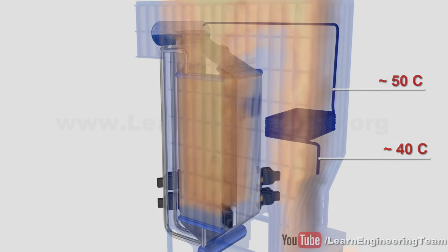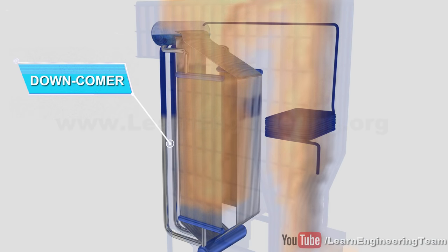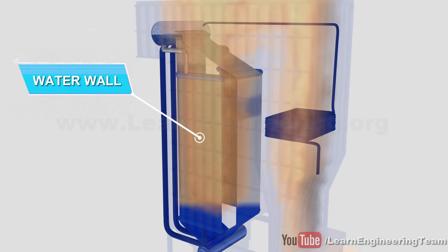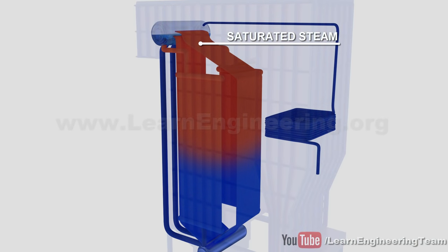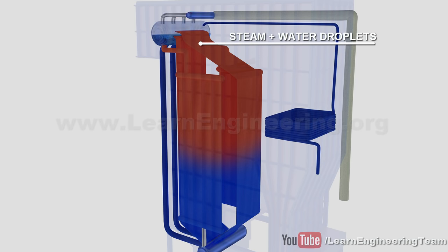From there, the water flows into a steam drum to the downcomer. It then passes through a narrow tube section called a water wall. The phase change of the water happens in the water wall. The steam that is produced, in addition to some water droplets, enters the steam drum again.